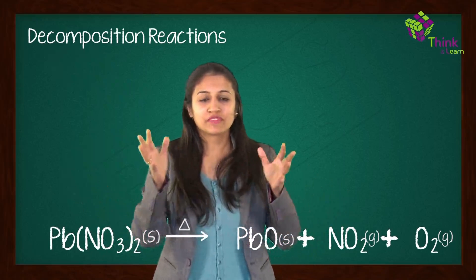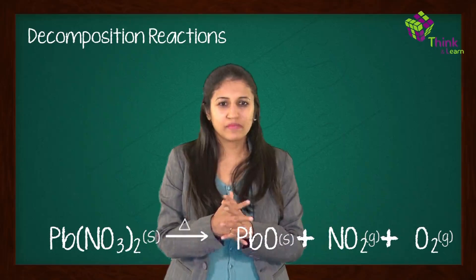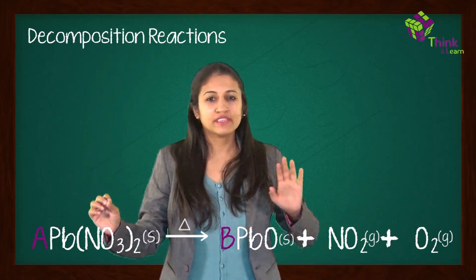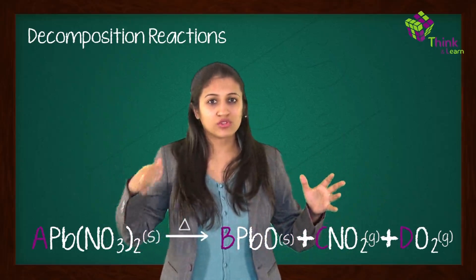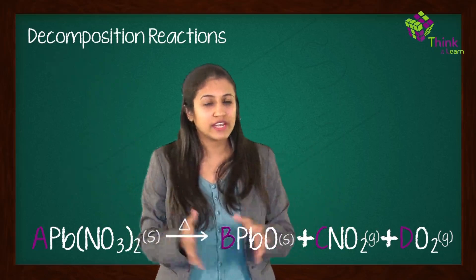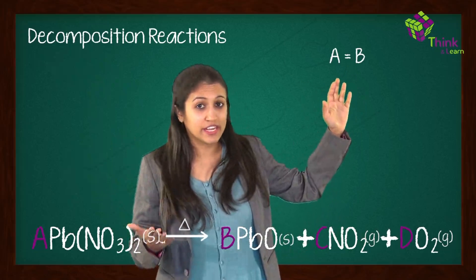We're going to balance this using the shortcut which we discussed earlier. What we'll first do is put the coefficients A, B, C, and D. And let's equate the number of elements on the left and the right hand side. So first let's consider lead. If you consider lead, you get A is equal to B. Then next if you consider N, nitrogen, you'll get 2A is equal to C.